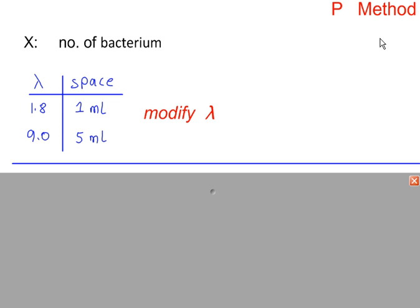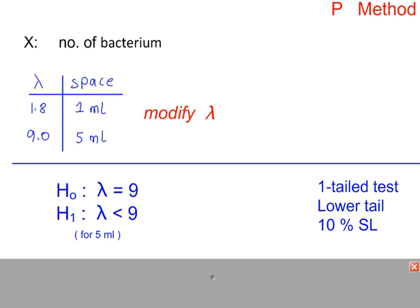For the probabilities method, we make the modification to lambda. H0 and H1. So far, it's the same as the critical values method.